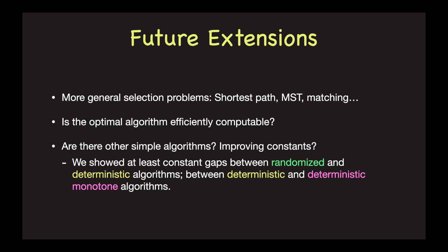As another more technical direction, can we efficiently compute the optimal algorithm or give simple characterizations of it? And can we find other simple algorithms with better approximation ratios? Our current approximation ratio is a five-digit number. Note that we know constant gaps between the optimum randomized algorithm and any deterministic algorithm, and between the optimum deterministic algorithm and any deterministic monotone algorithm. This suggests that an algorithm in some simple forms must suffer a loss in constants.